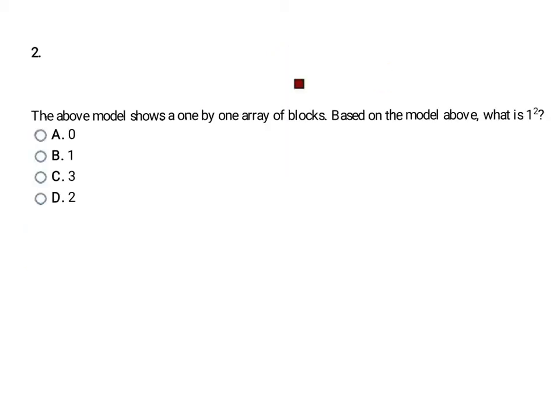Here's another model. This one shows a 1 by 1 array of blocks. Based on the model above, what is 1 squared? How many little blocks are there? Well, that one's easy to count - there's only 1. And that's because 1 times 1 equals 1. 1 squared equals 1.